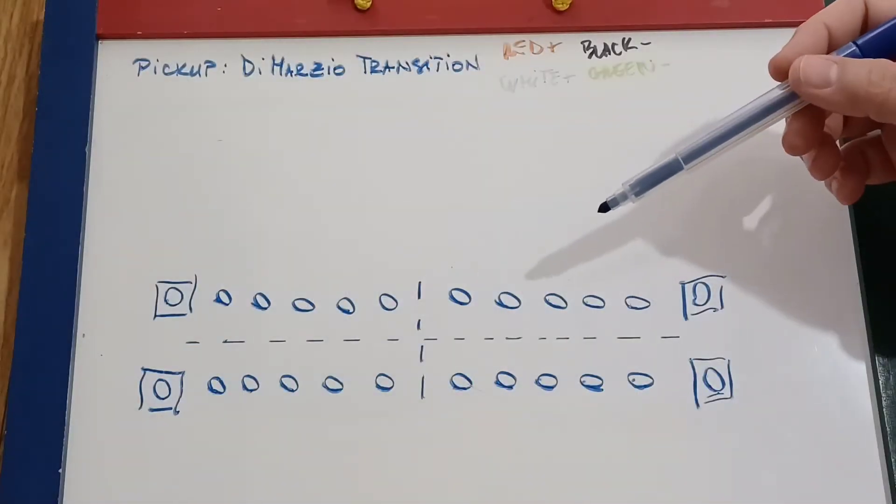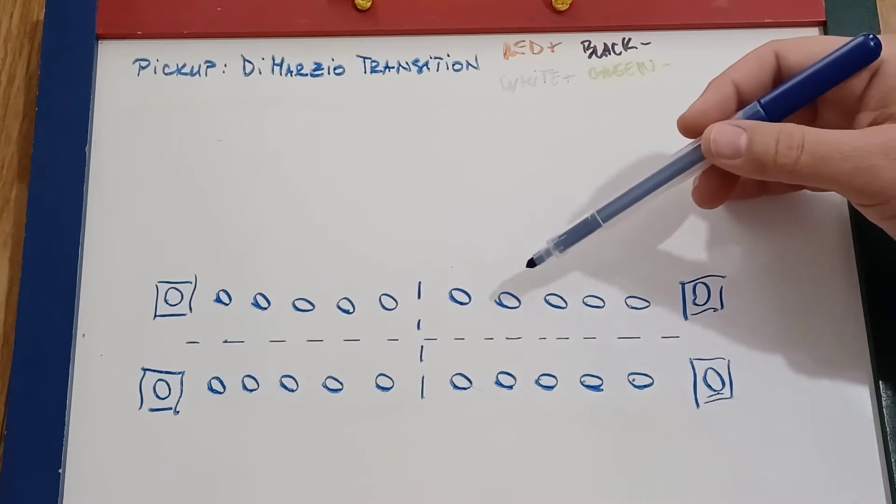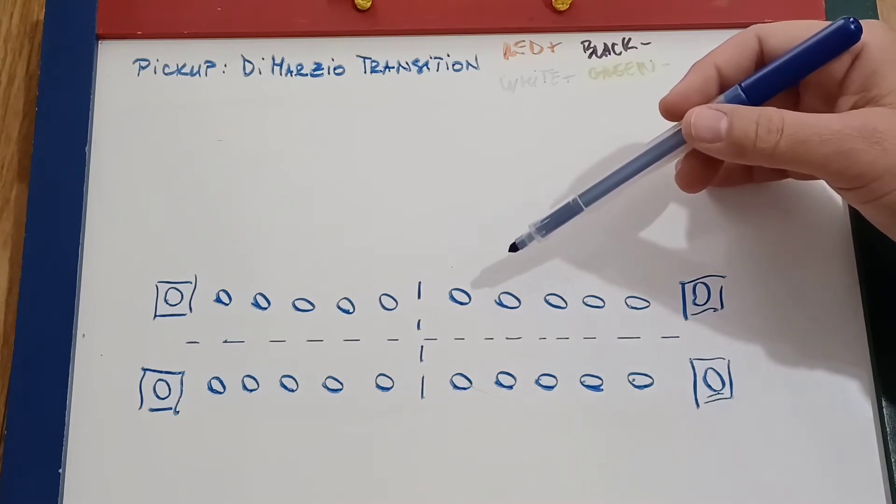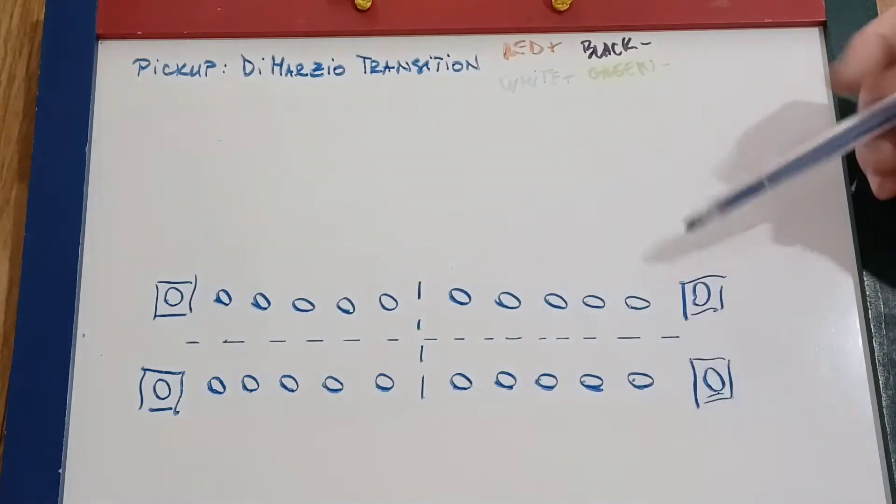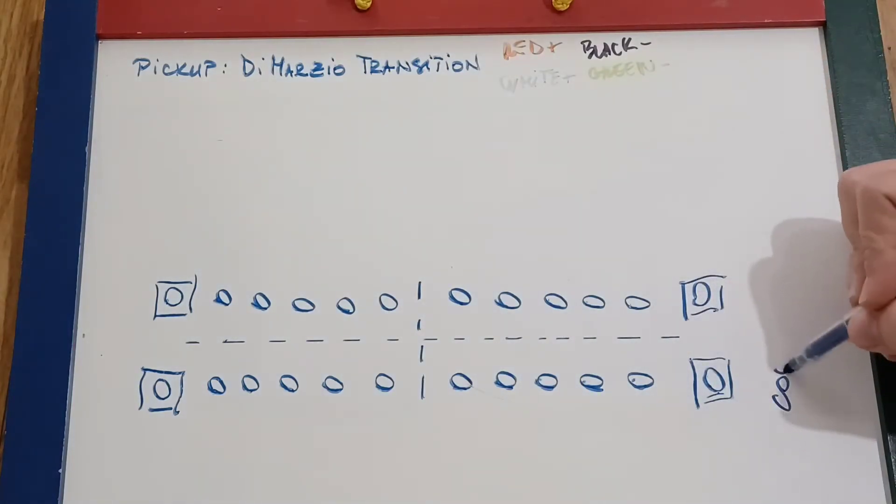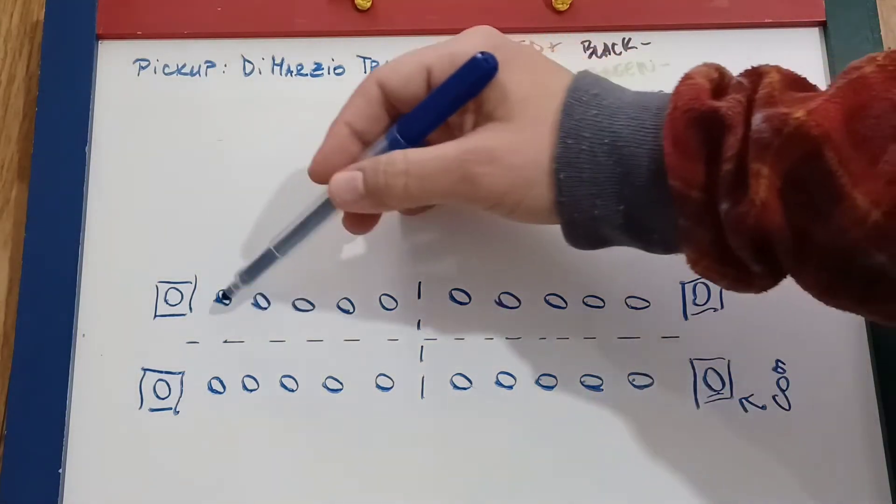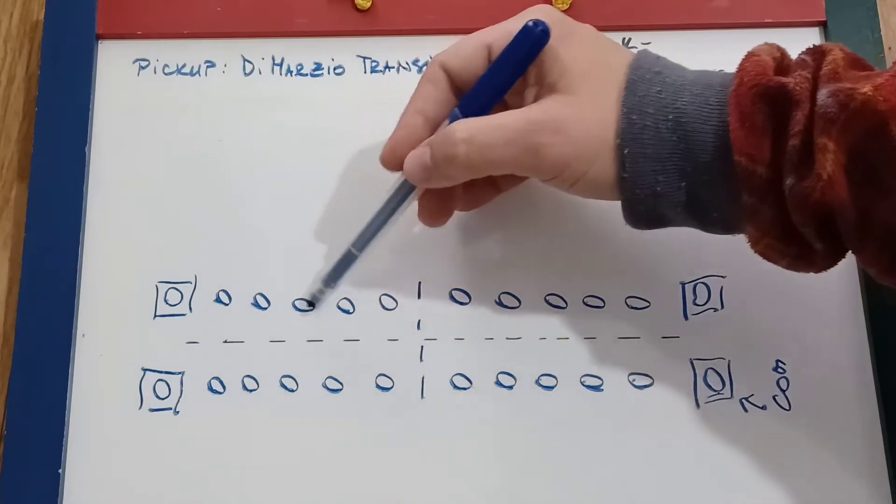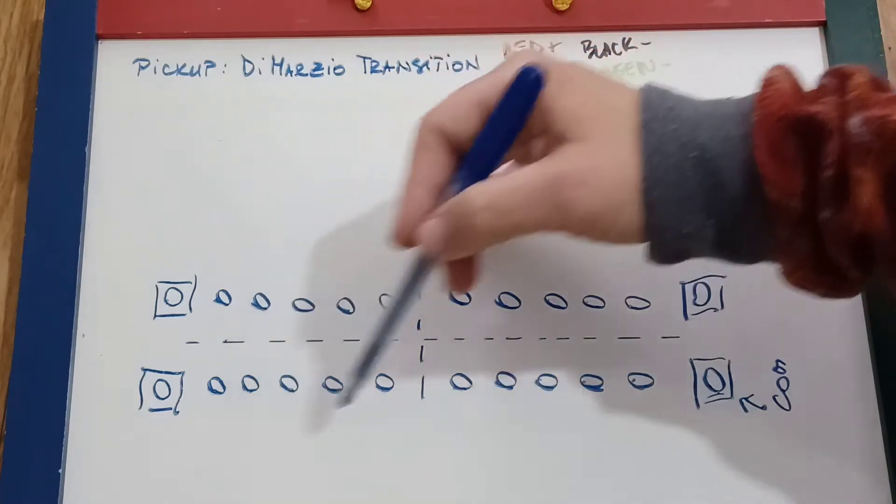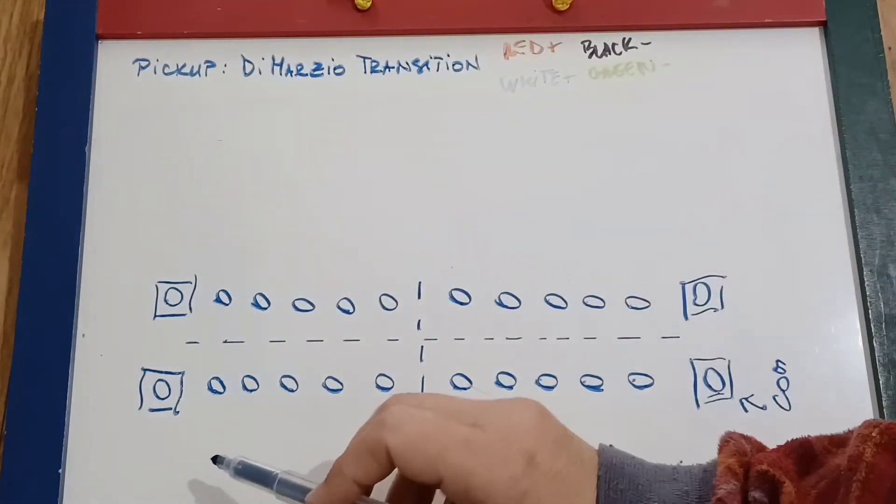Here we are with our graphic representation of a super five-way switch. So these four are the commons, and these of course are one, two, three, four sections with one, two, three, four, five lugs each.